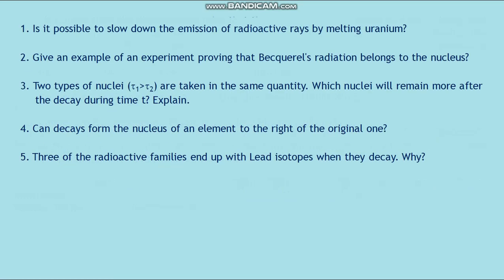Next slide: Questions for students. First, is it possible to slow down the emission of radioactive rays by melting uranium? Second, give an example of an experiment proving that Becquerel's radiation belongs to the nucleus. Third, two types of nuclei: τ₁ > τ₂ are taken in the same quantity. Which nuclei will remain more after the decay during time t? Explain. Fourth, can decays form the nucleus of an element to the right of the original one? Fifth, three of radioactive families end up with lead isotopes when they decay. Why?